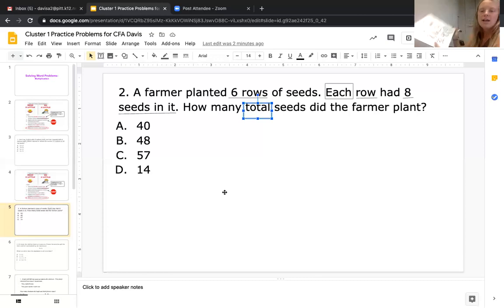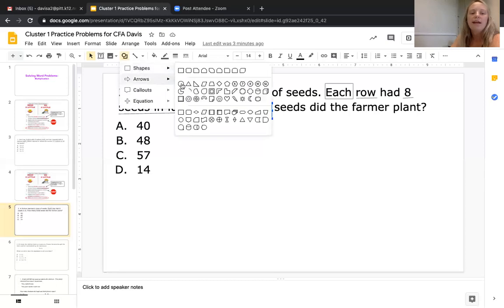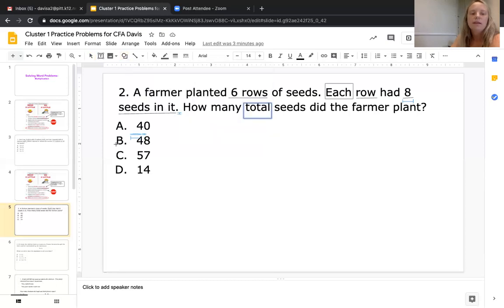I think this is my answer. How many total seeds? This is how many there are in all. Let me see if that's one of my answer choices: 40, 48. So I'm going to circle 48.